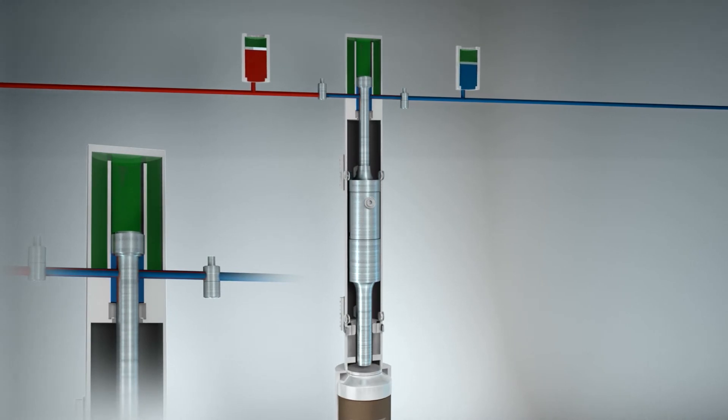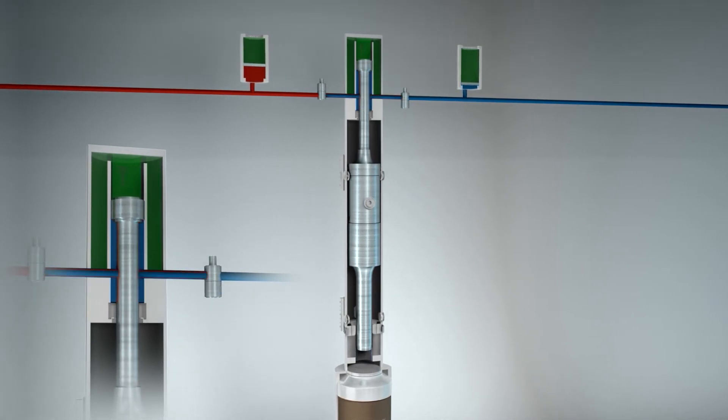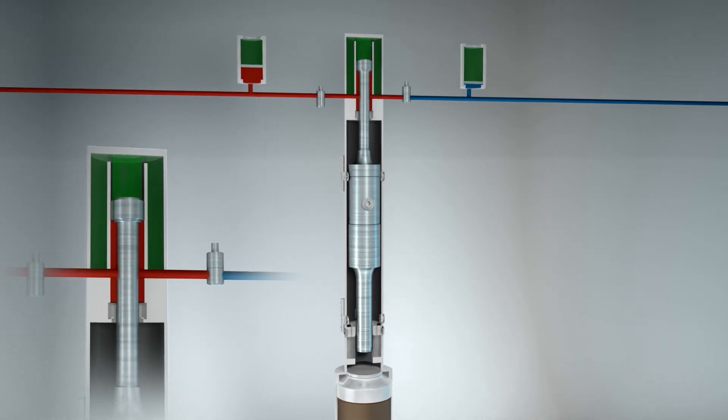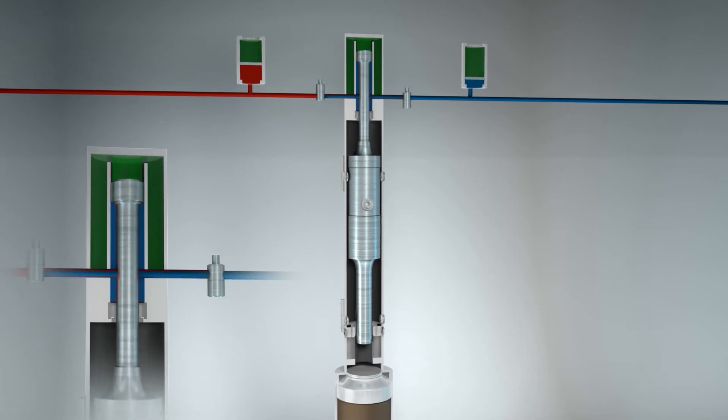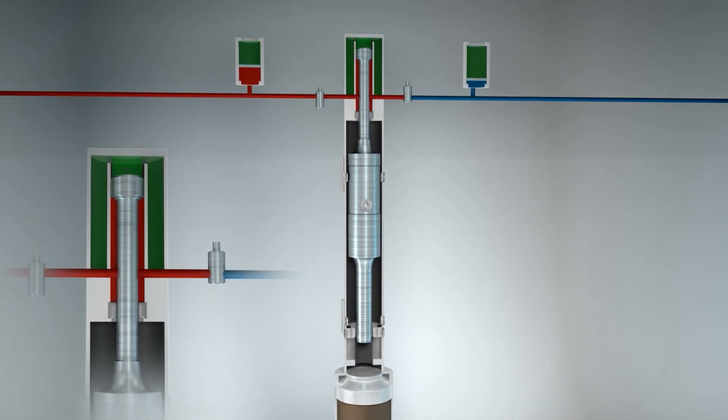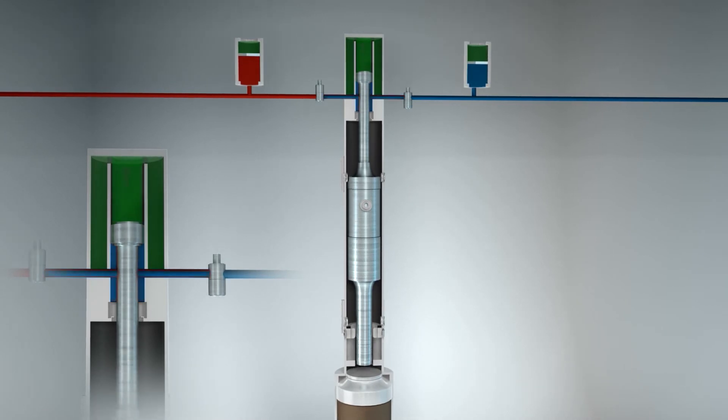The ram then falls and receives additional force from the gas pressure above the piston. This results in an acceleration of 2G. A stroke of 1 meter is therefore equivalent to a drop height of 2 meters.